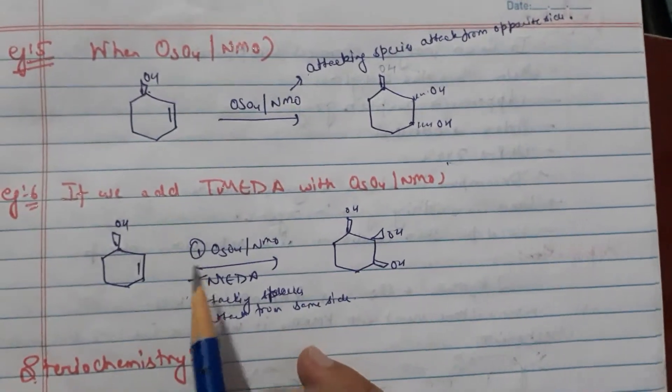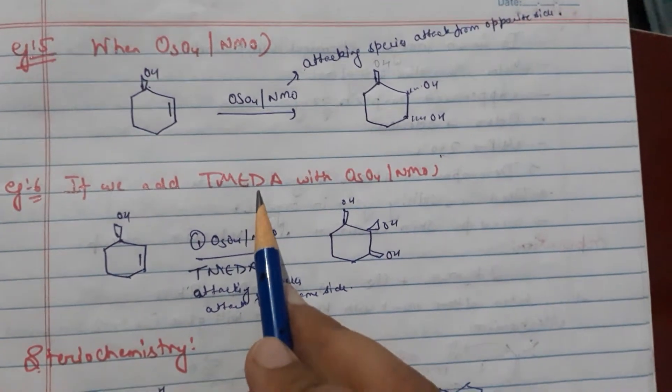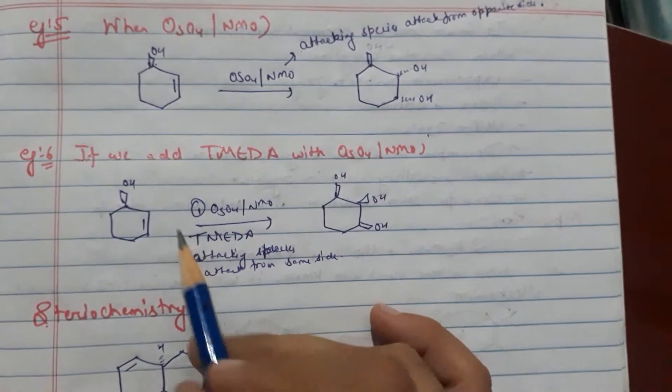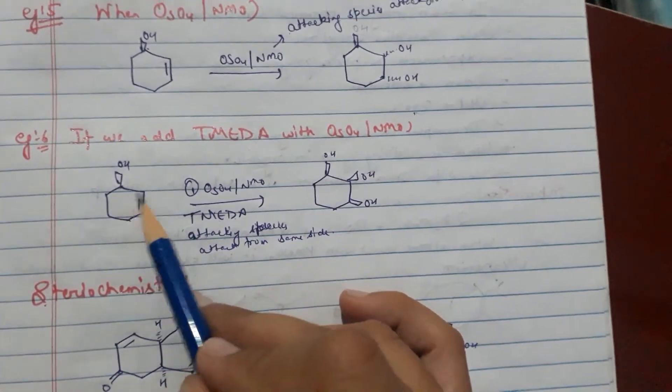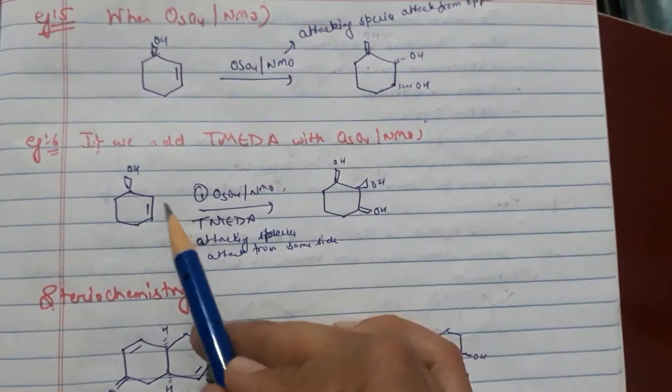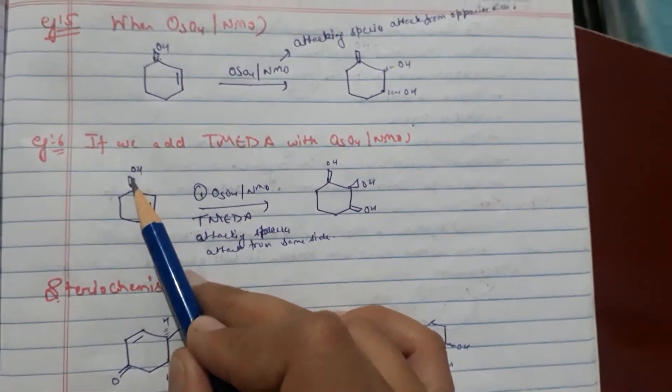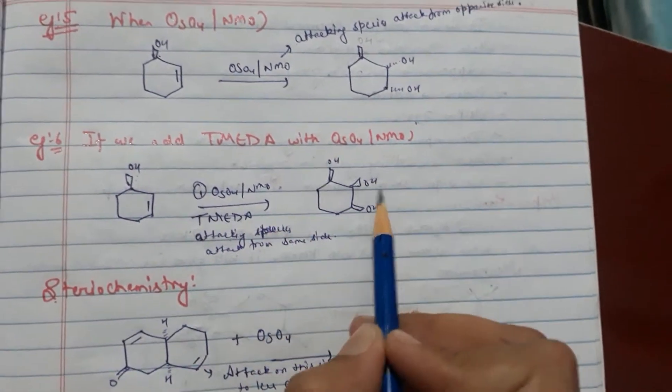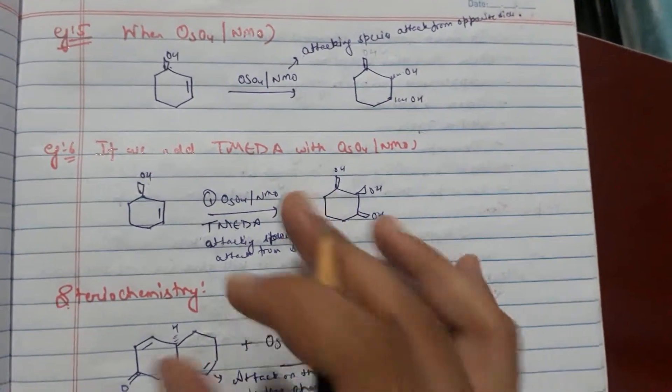Now if we add TEMED with Osmium tetraoxide and NMO, TEMED makes the attacking species on same side as substitution present. So substitution present above the plane, attacking species also present above the plane. So this is the stereochemistry of Osmium tetraoxide.